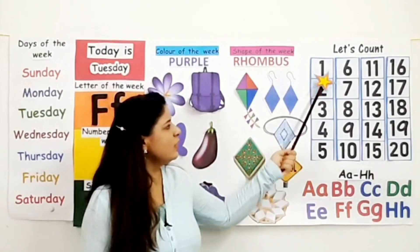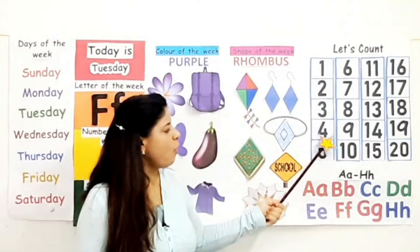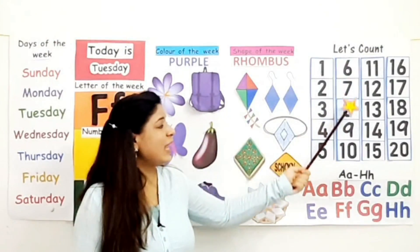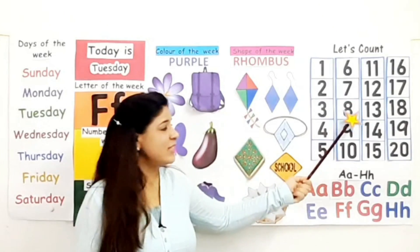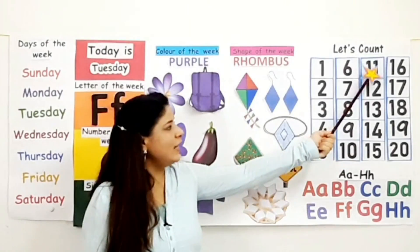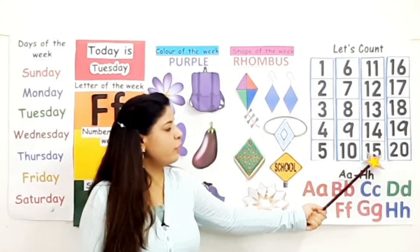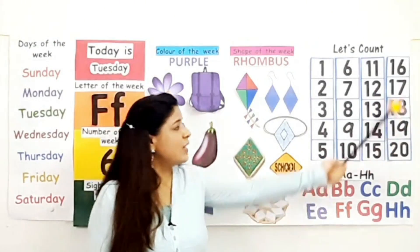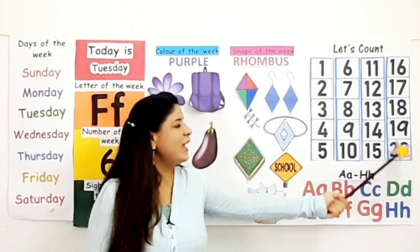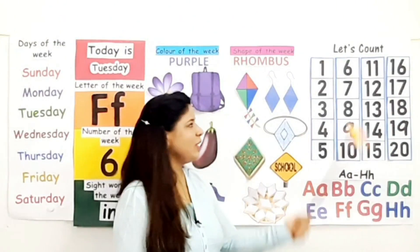1, 2, 3, 4, 5, 6, 7, 8, 9, 10, 11, 12, 13, 14, 15, 16, 17, 18, 19, 20. Now count along with me.